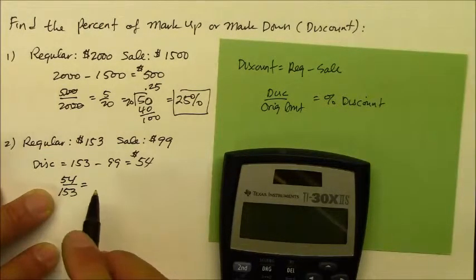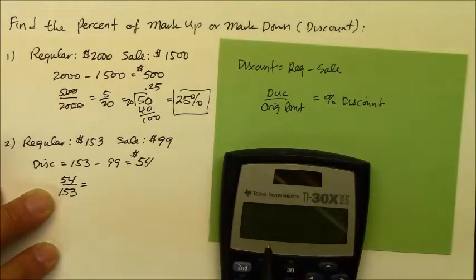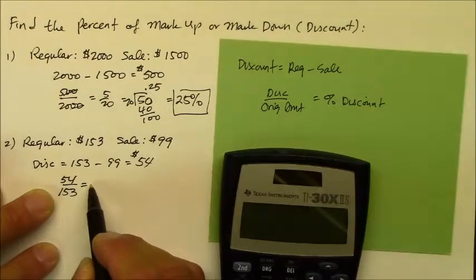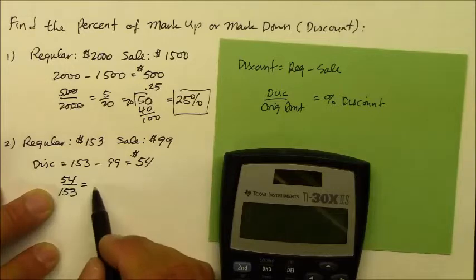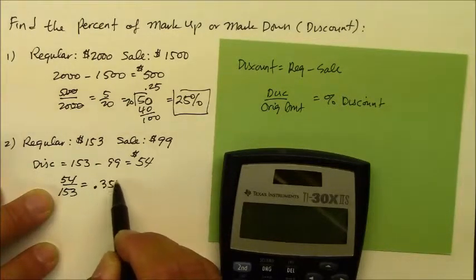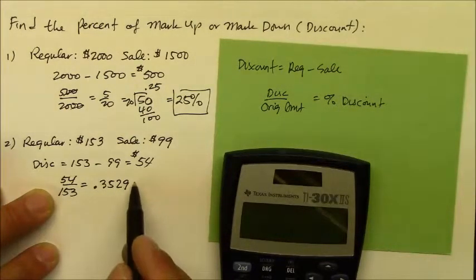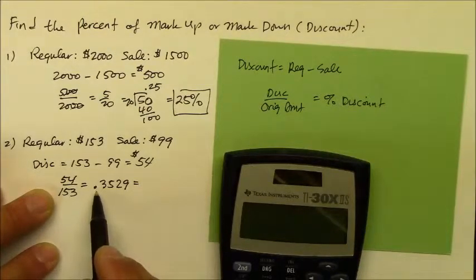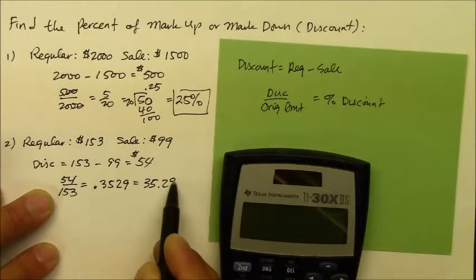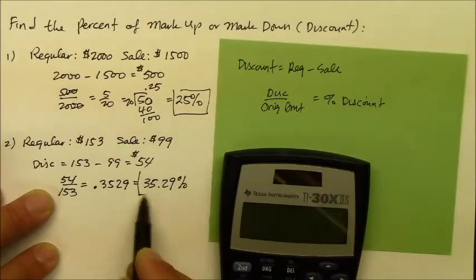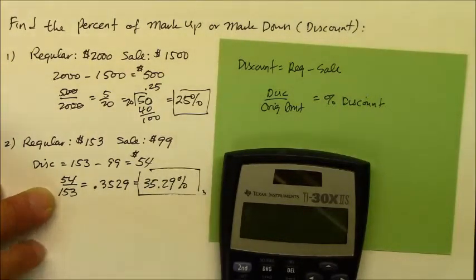Thank heavens, we have a calculator to determine that one. So we get 54 divided by 153. My calculator says if I round it off to the ten thousandths, I get 0.3529. And to make that into a percent, I just move the decimal to the right twice. I get 35.29%.